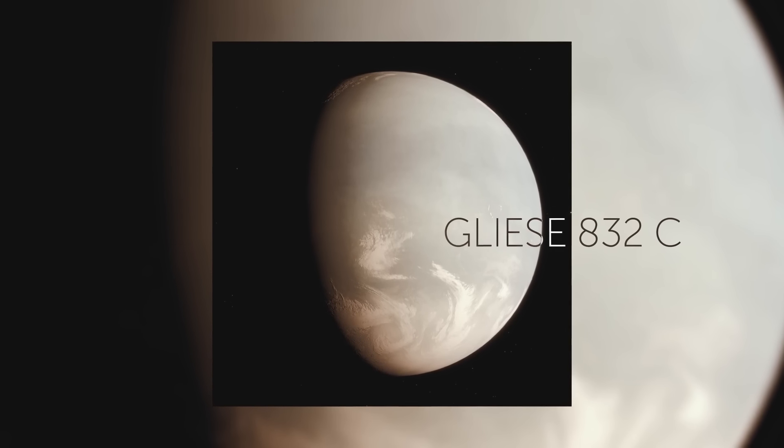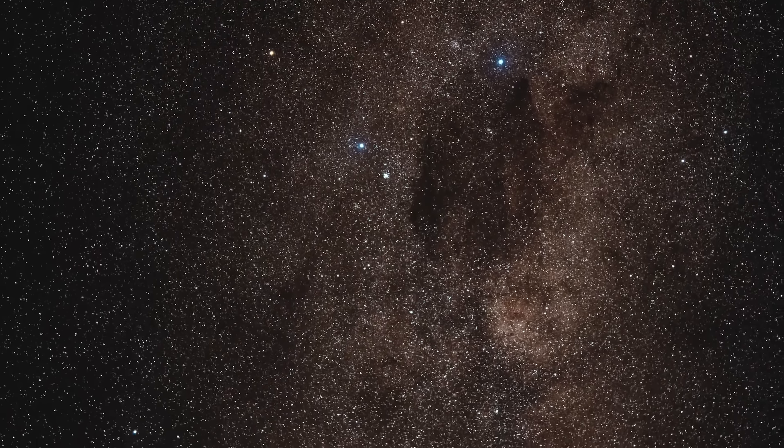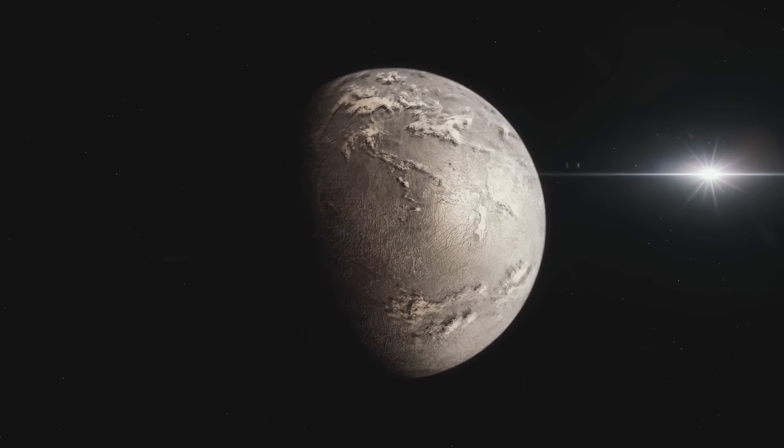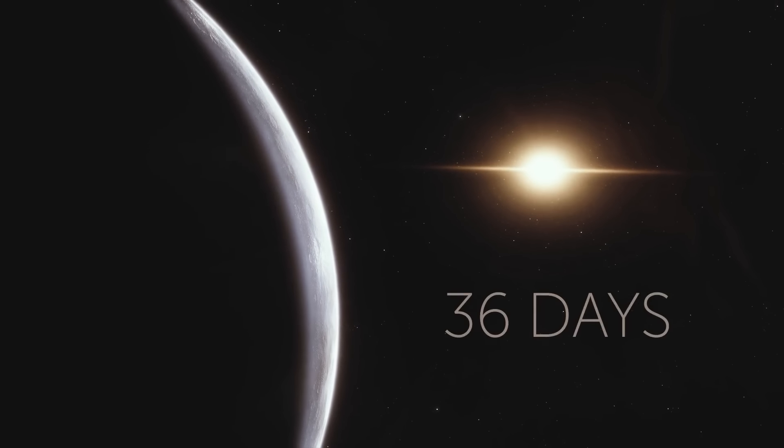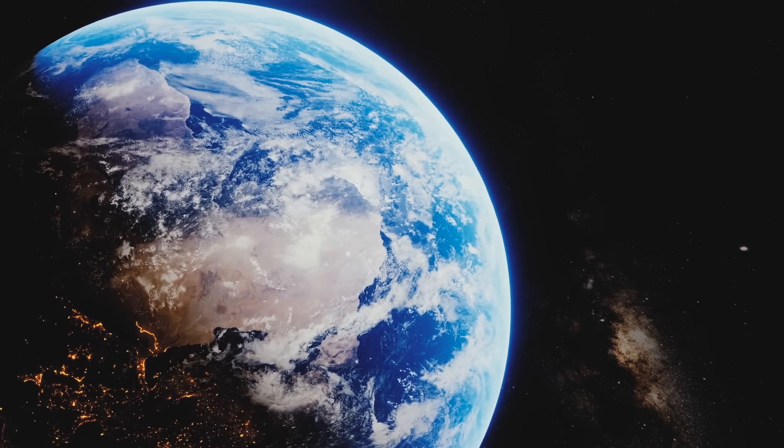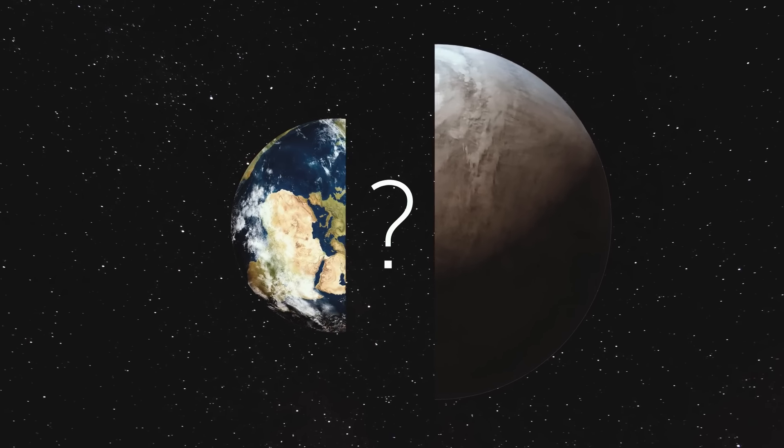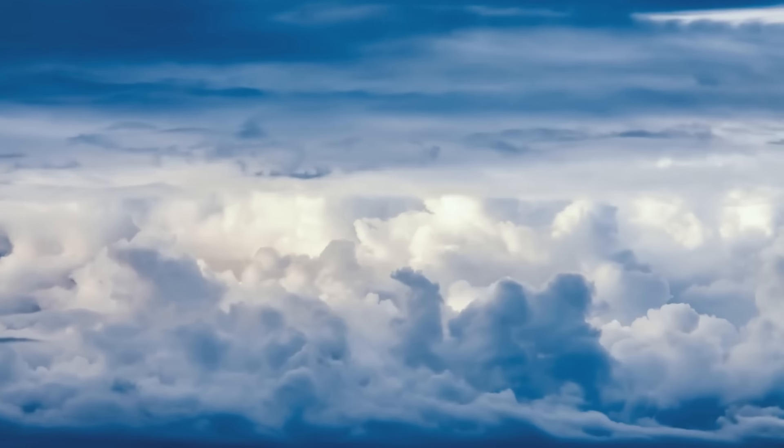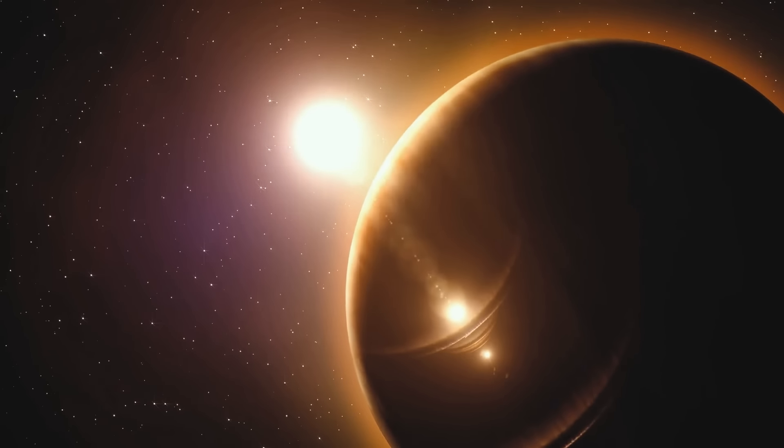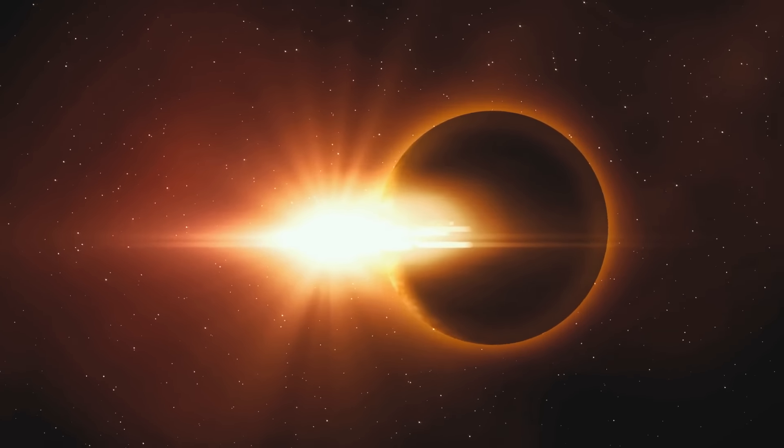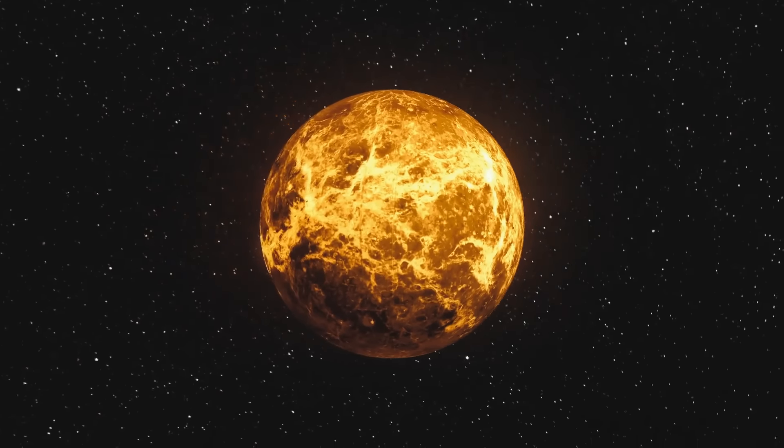Gliese 832C is 16 light-years away from Earth. In the cosmic scheme of things, it's a stone's throw away. This exoplanet is five times as massive as Earth and travels much closer to its parent star. That's why a year on this planet lasts a mere 36 days. But since this star is a red dwarf, much cooler and dimmer than the Sun, Gliese 832C gets as much light and heat as our planet does. At the same time, it's still unclear if Gliese 832C is similar to Earth. It probably has a much thicker atmosphere that creates a runaway greenhouse effect. This phenomenon occurs when a planet absorbs more heat from its host star than it can release back into space. This means that Gliese 832C is more likely to resemble scorching hot Venus rather than relatively cool Earth.